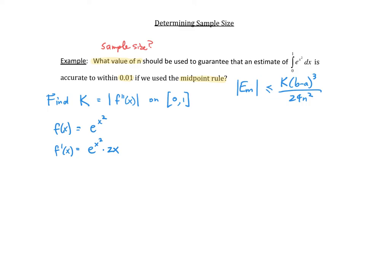Next, we need to calculate the second derivative. To do the second derivative, I need to use the product rule. When I do the product rule, I take the derivative of the first function, which is e to the x squared — we just calculated that as e to the x squared times 2x. Multiply by the second function, which is 2x, and then add the derivative of the second function, which is 2, times the first function, e to the x squared.